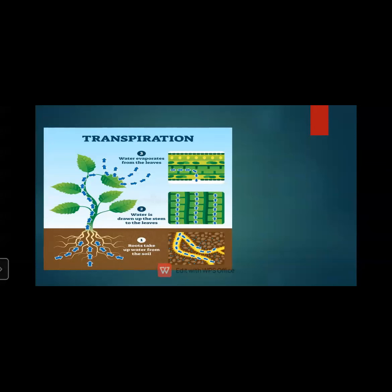Looking at the picture of transpiration, a plant is shown with roots. The root takes up water from the soil — shown by blue colour arrows going upward. Water grows up the stem to the leaves through xylem. Xylem carries water from roots to each and every part of the plant. The water then evaporates from the leaves through stomata.